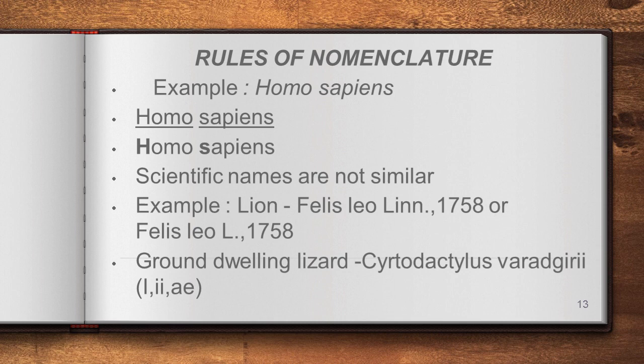As per binomial nomenclature, organisms must have either two or three names. The genus name must begin with a capital letter and the species name must begin with a small letter. Additionally, the scientific names of any two organisms must not be similar — each and every species has a unique name not shared by any other organism in the world.